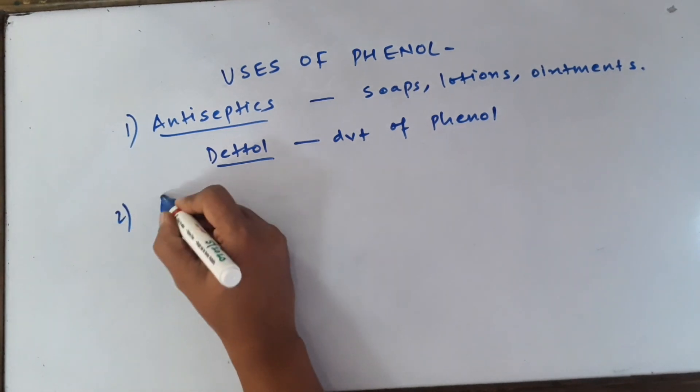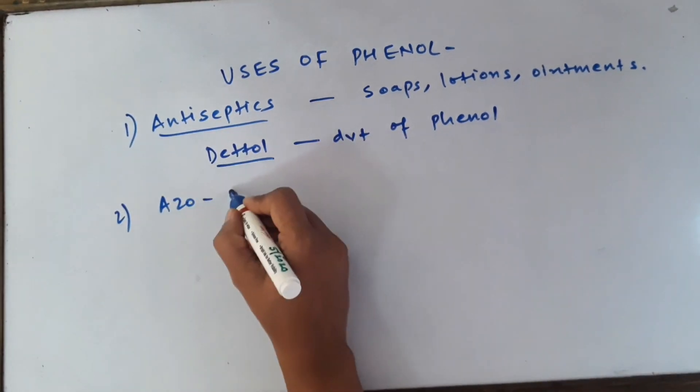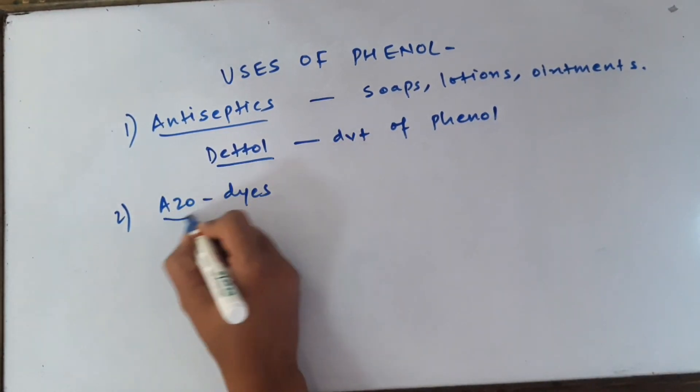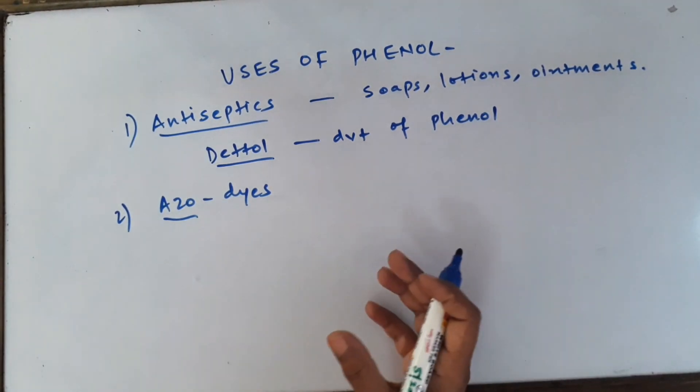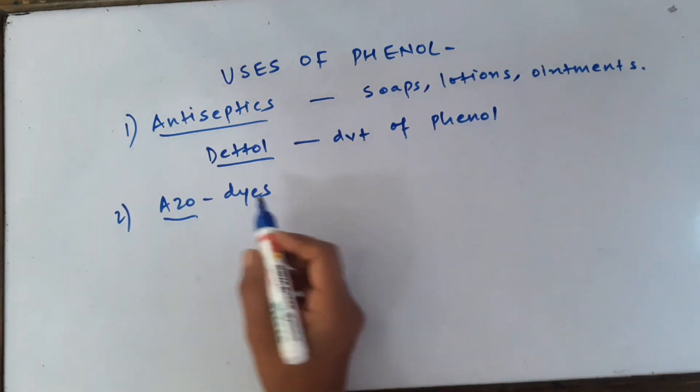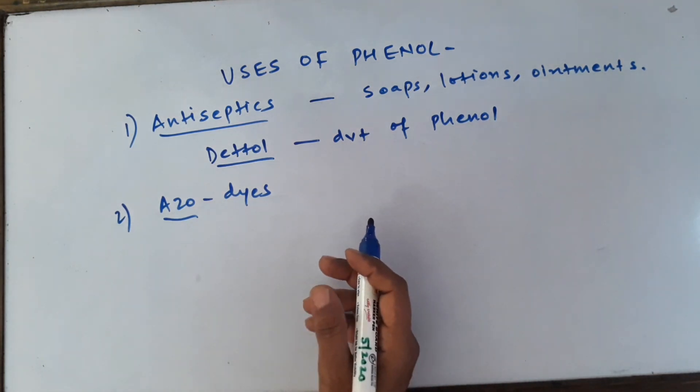The second important use of phenol is in the formation of colored compounds called as dyes. Dyes are the compounds which are used to color the fabric or the textiles. Azo-dyes are the compounds which are prepared from phenol.